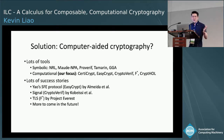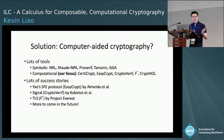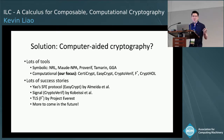I really believe there's a lot to be excited about in this area, and I think we'll have mechanized security proofs for a lot of primitives and protocols we care about. But we've identified a large limitation of current tools: the security notions you can prove using them aren't composable, making it really difficult to prove security for large cryptosystems with many different components.